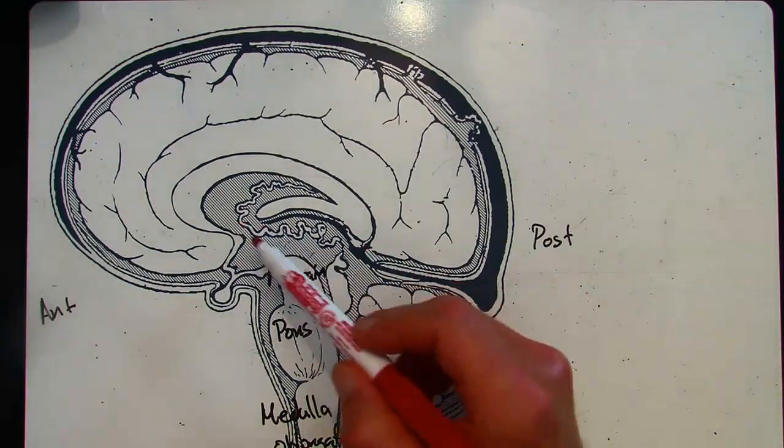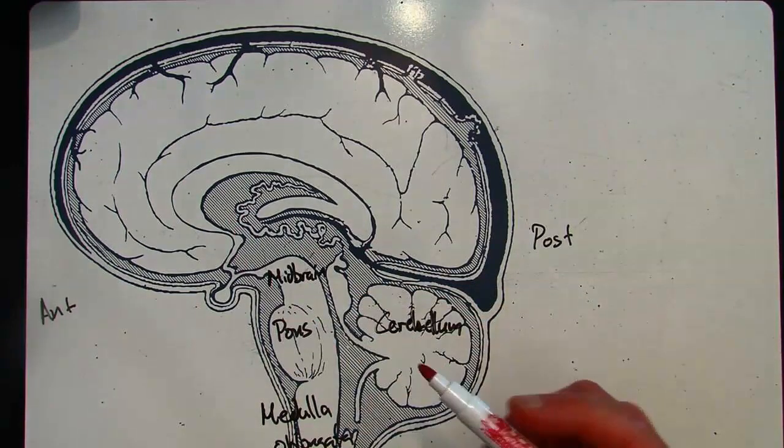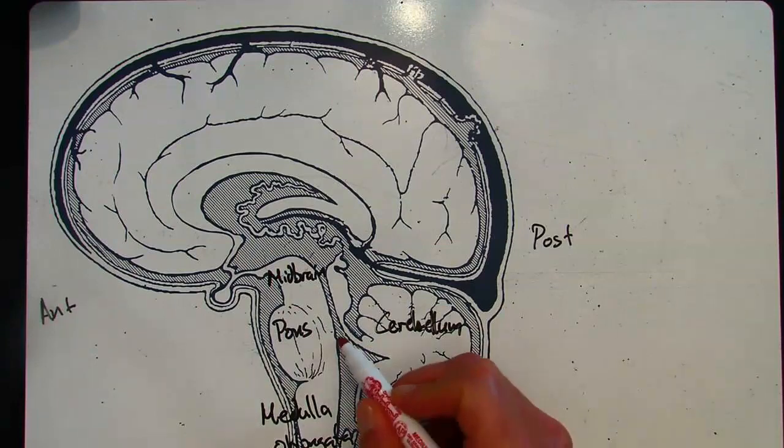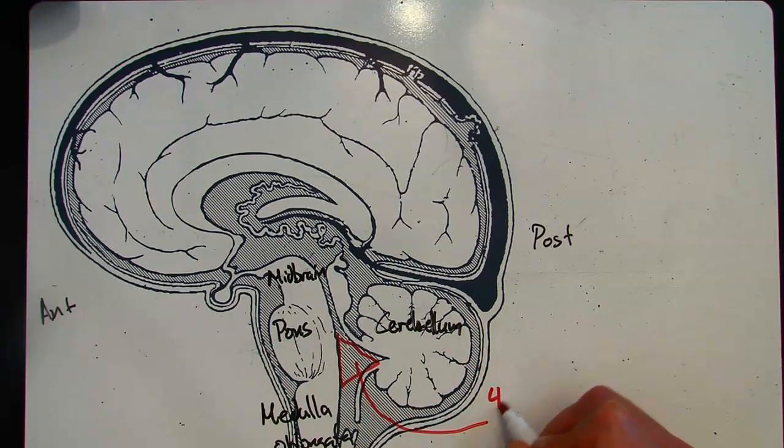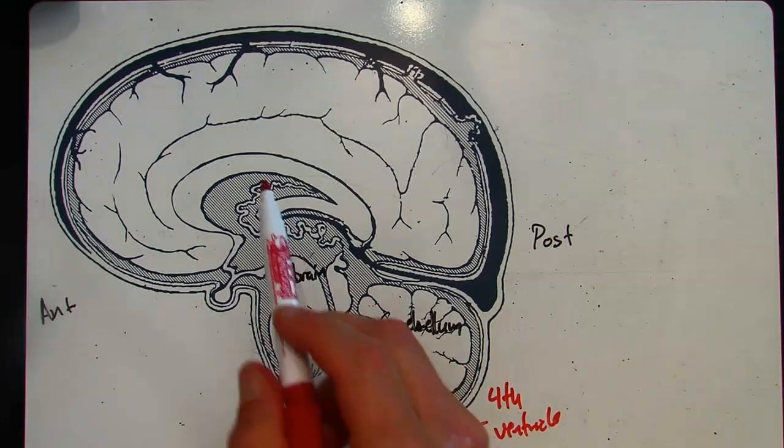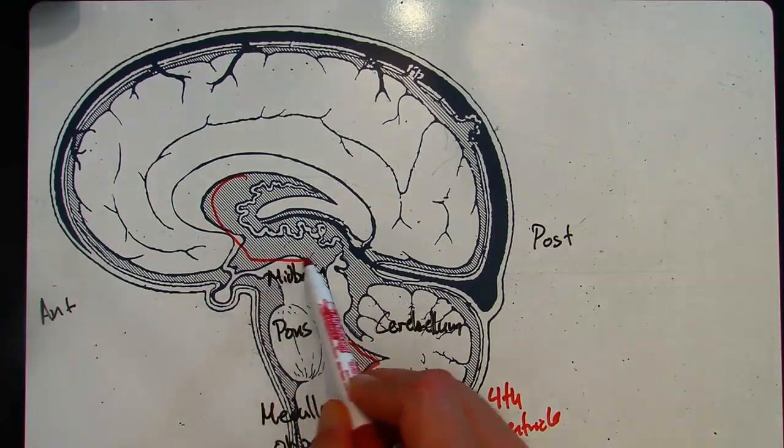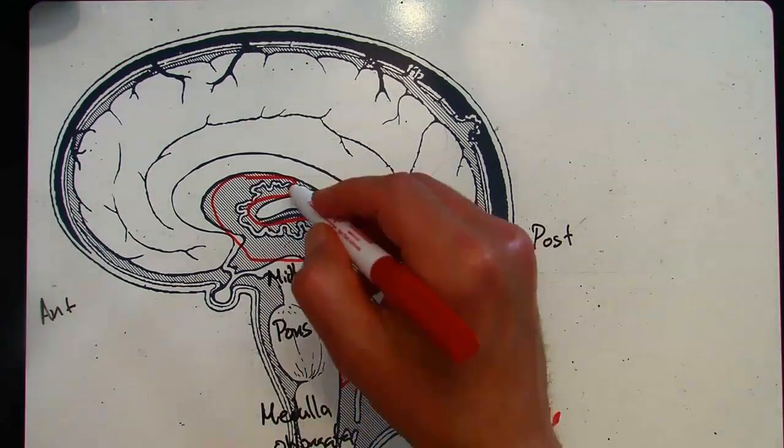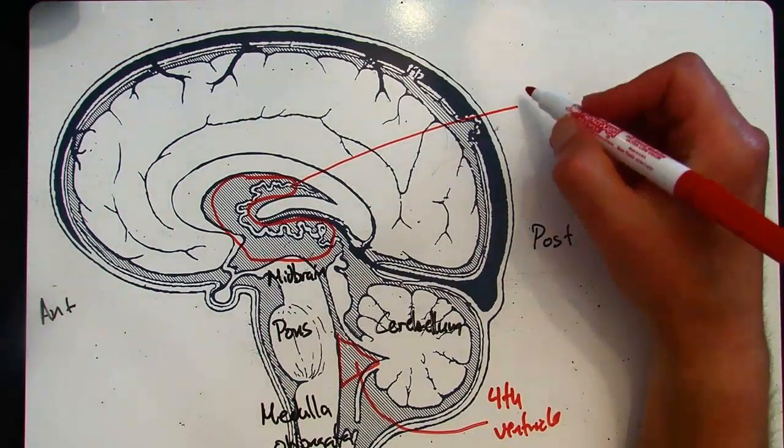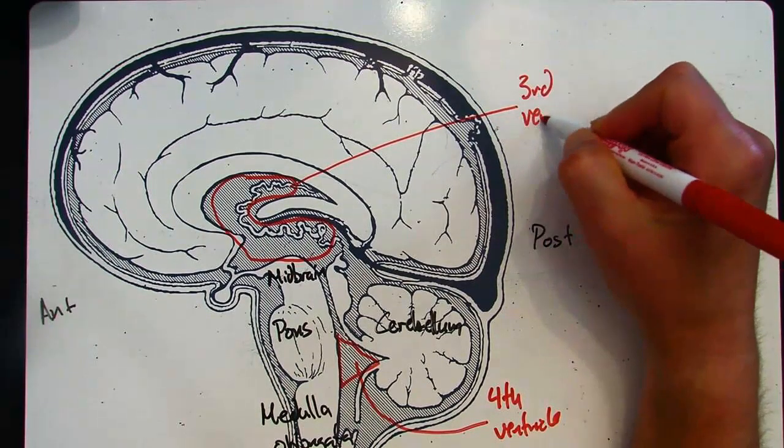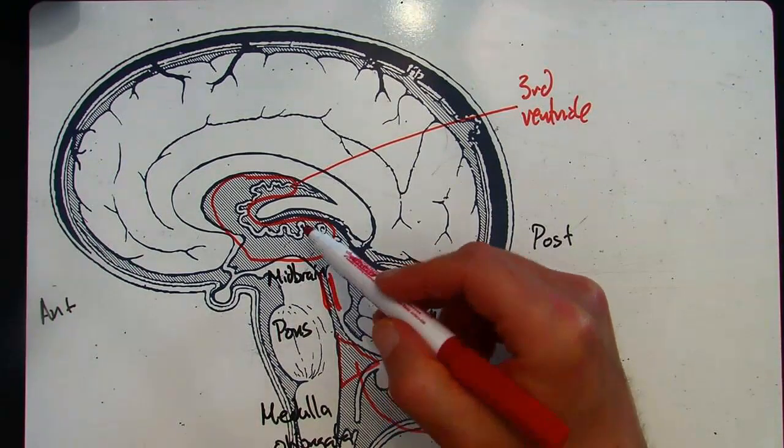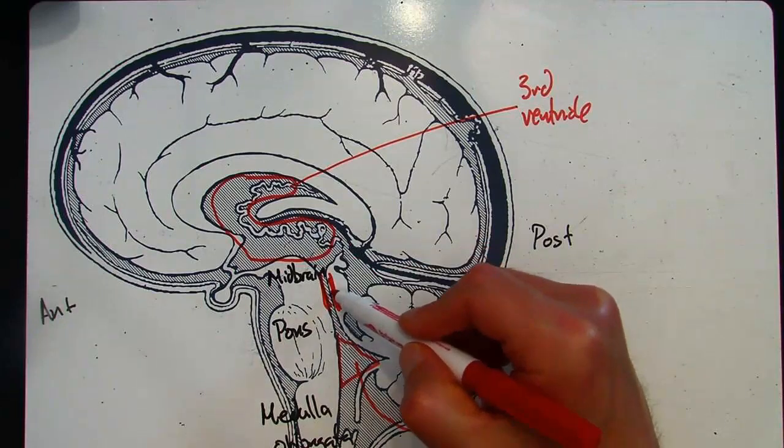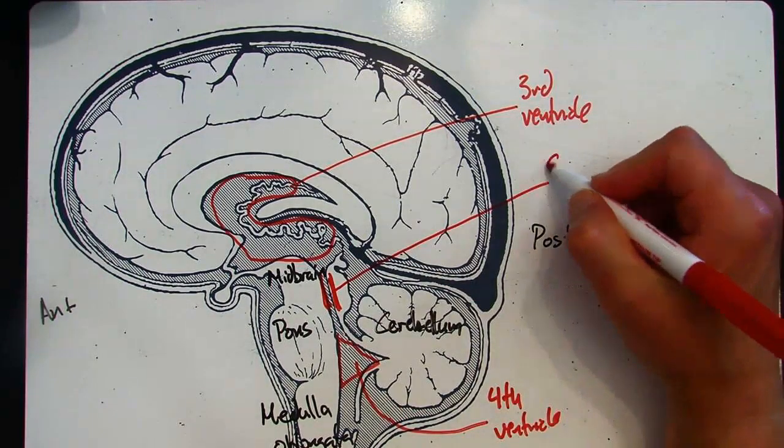Now you'll notice there are some hatched lines on here. Those represent spaces. So this space right here, this is the fourth ventricle. This space up here is the third ventricle. And then this tube right here that's connecting the third to the fourth ventricle, that tube is the cerebral aqueduct.